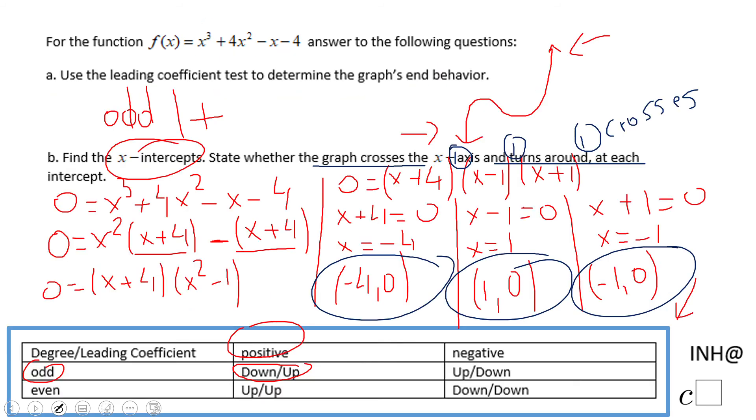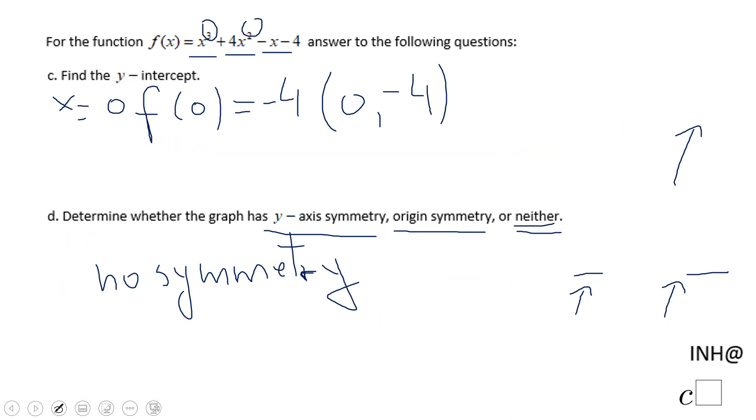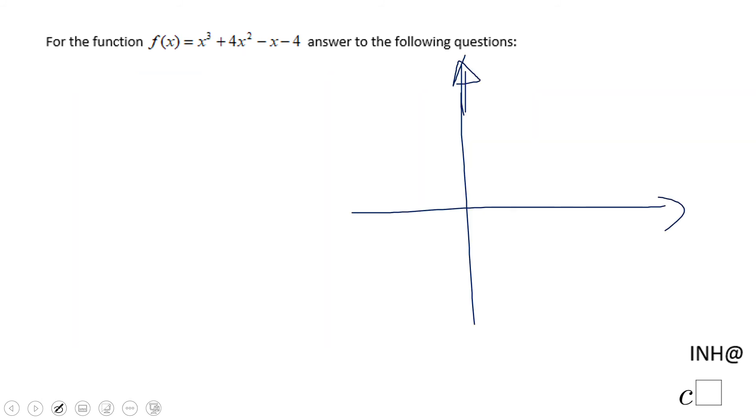If you remember, the zeros were positive 1, negative 1, and -4. Let's go back to see it—negative 4, 1, and negative 1, right. So we're gonna have -4 right here, -1 right here, and 1 right here. If you remember, the end behavior was left down, right up. So I'm gonna start from here, I'm gonna cross the x-axis.